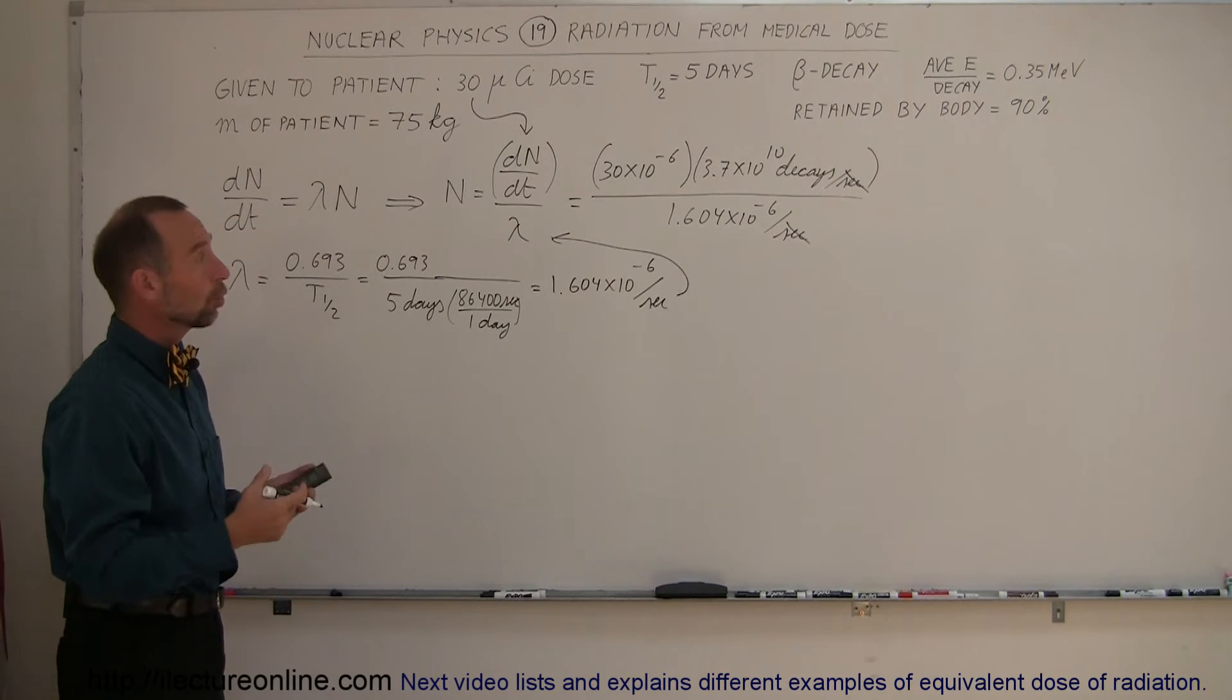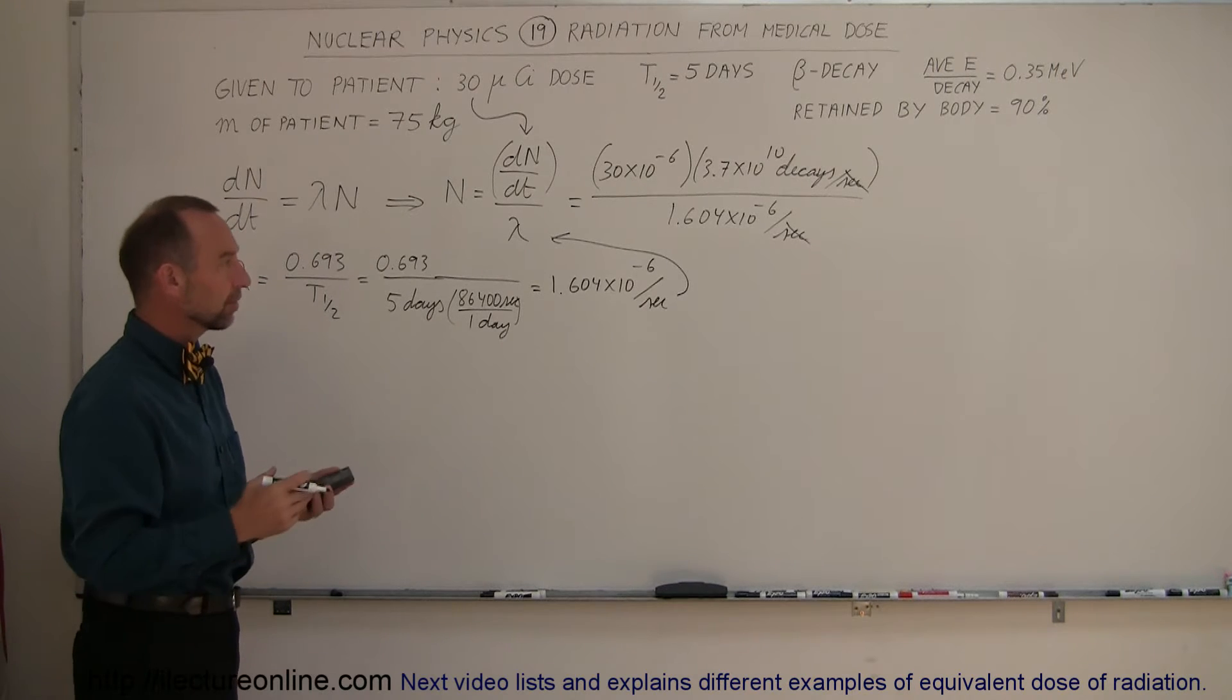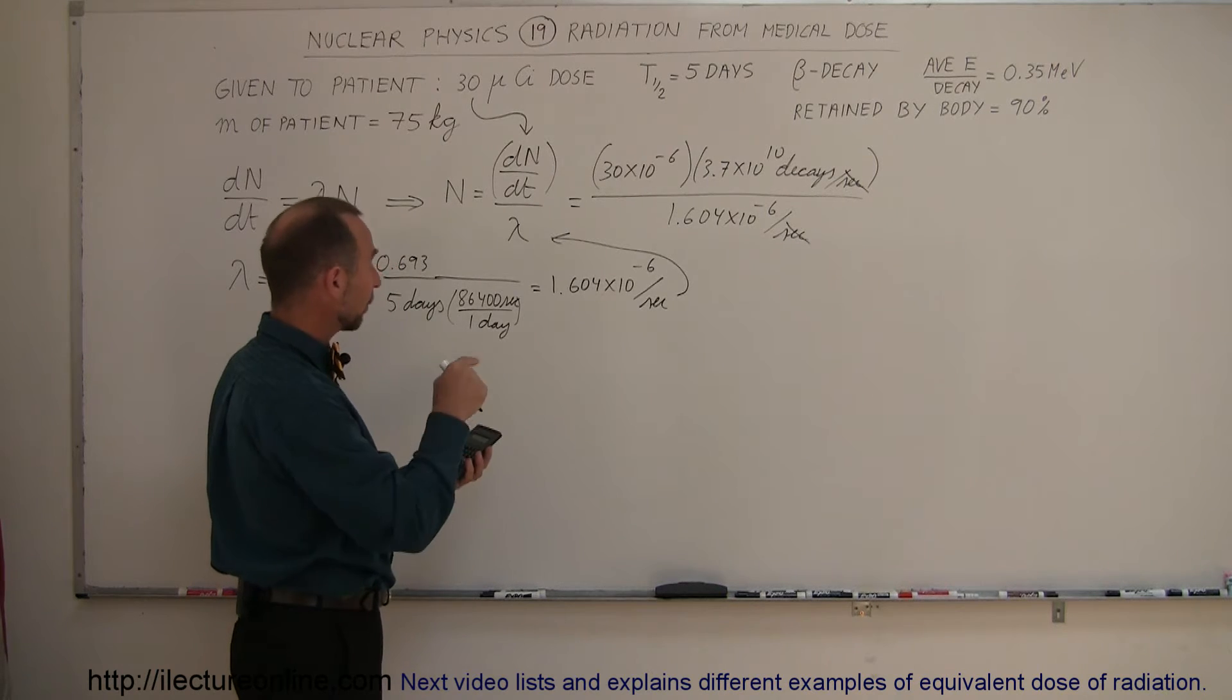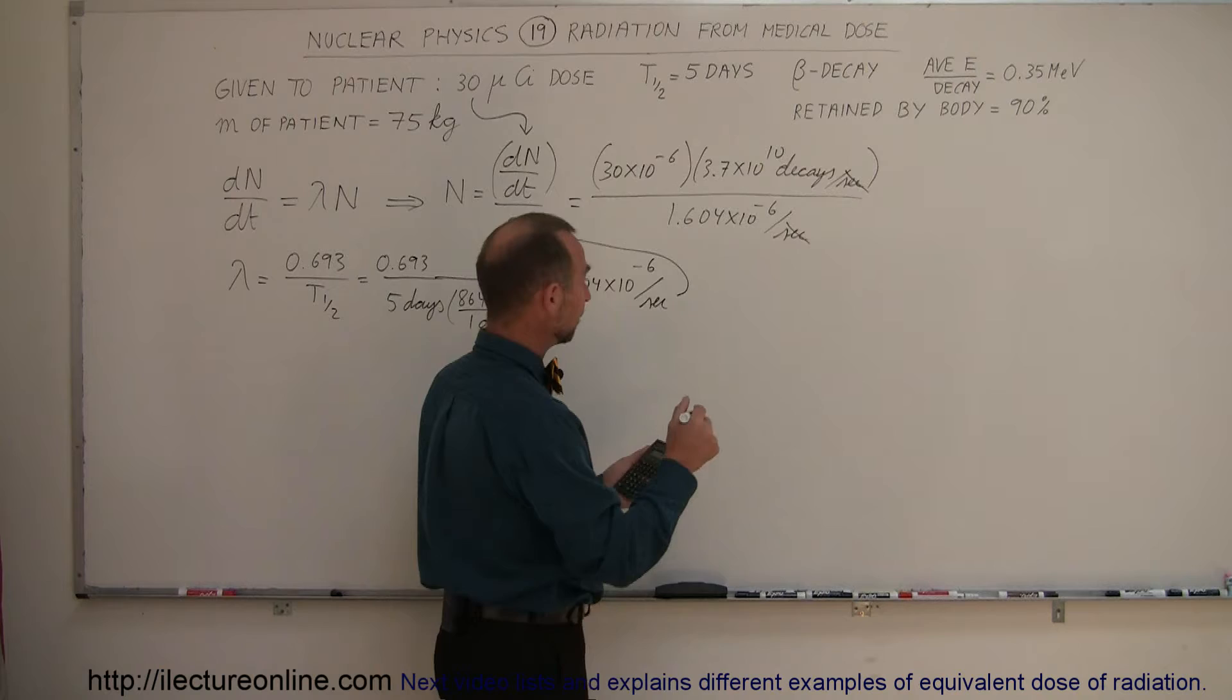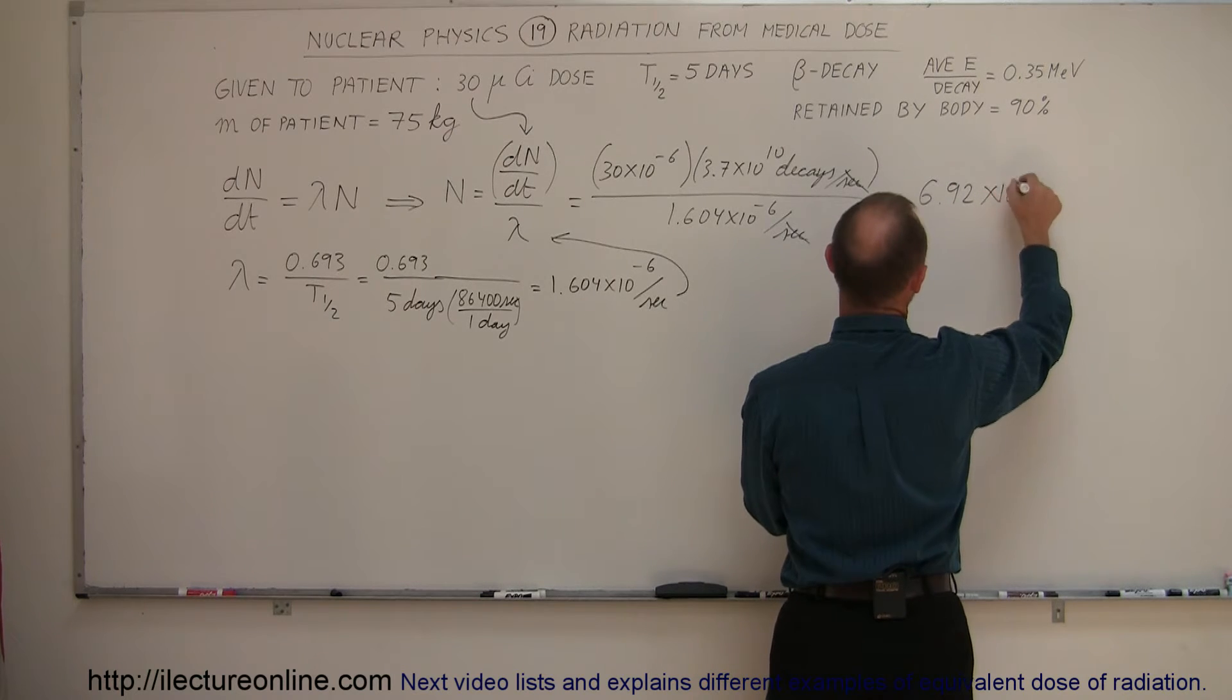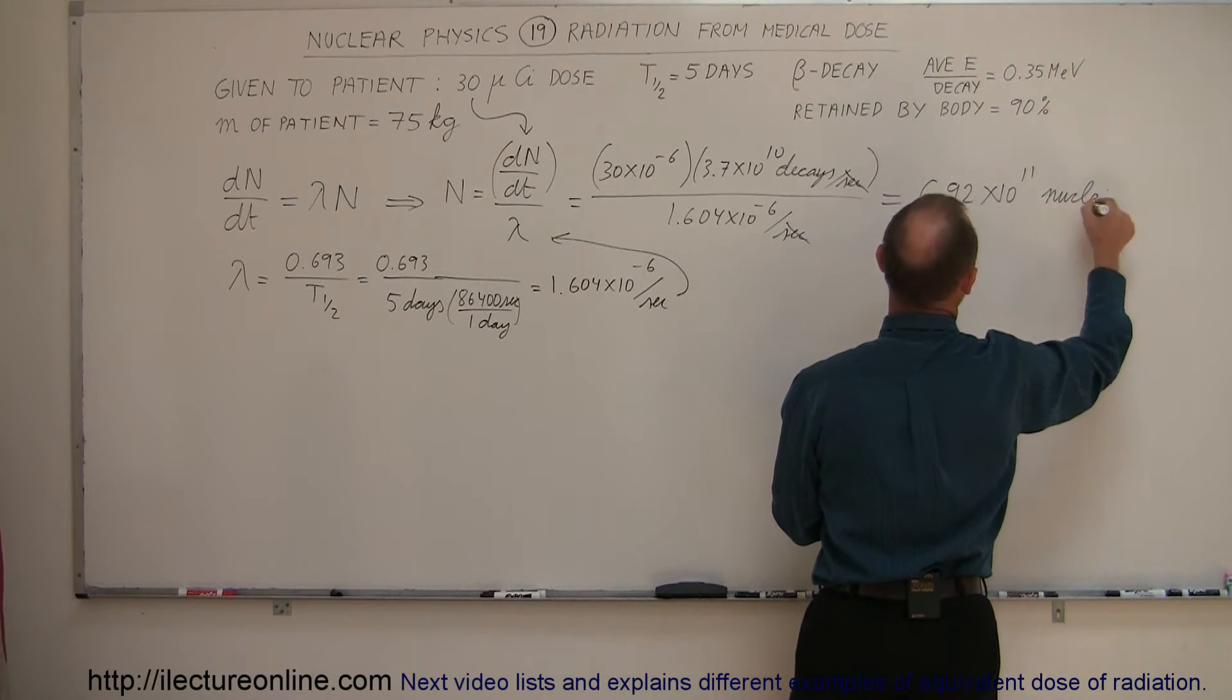Notice that the per second cancels out, and you'll end up with the total number of decays that your body will experience through the life, so to speak, of that medicine. So we'll take that number, take the inverse since it's a denominator, multiply that times 30 e to the minus 6, and multiply that times 3.7 e to the 10th. That gives me the total number of radioactive nuclei: 6.92 times 10 to the 11th nuclei that are going to decay.